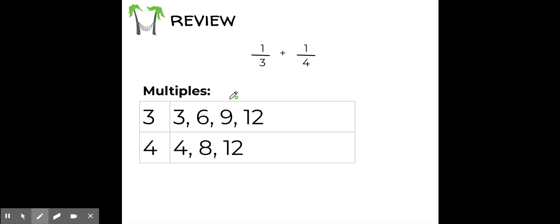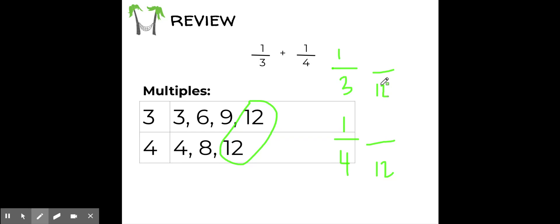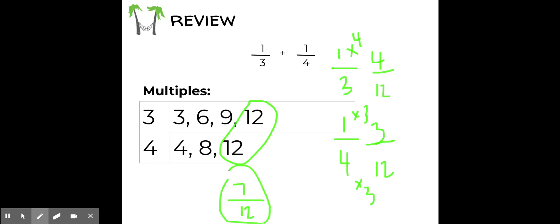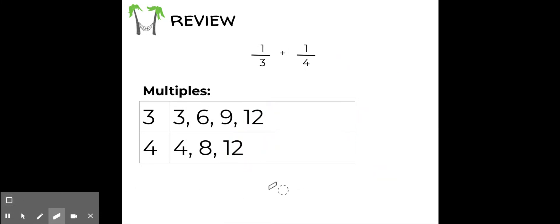We listed out the multiples for both denominators. For 3 I have 3, 6, 9, and 12; for 4 I have 4, 8, and 12 — I can see 12 in common. I write these fractions vertically and change the denominators to 12. How did I get from 3 to 12? I multiplied by 4. Whatever I do to the bottom I do to the top: 1 times 4 is 4. From 4 to 12 I multiplied by 3, so 1 times 3 is 3. Now I can add the numerators: 7/12. So 1/3 plus 1/4 is 7/12.